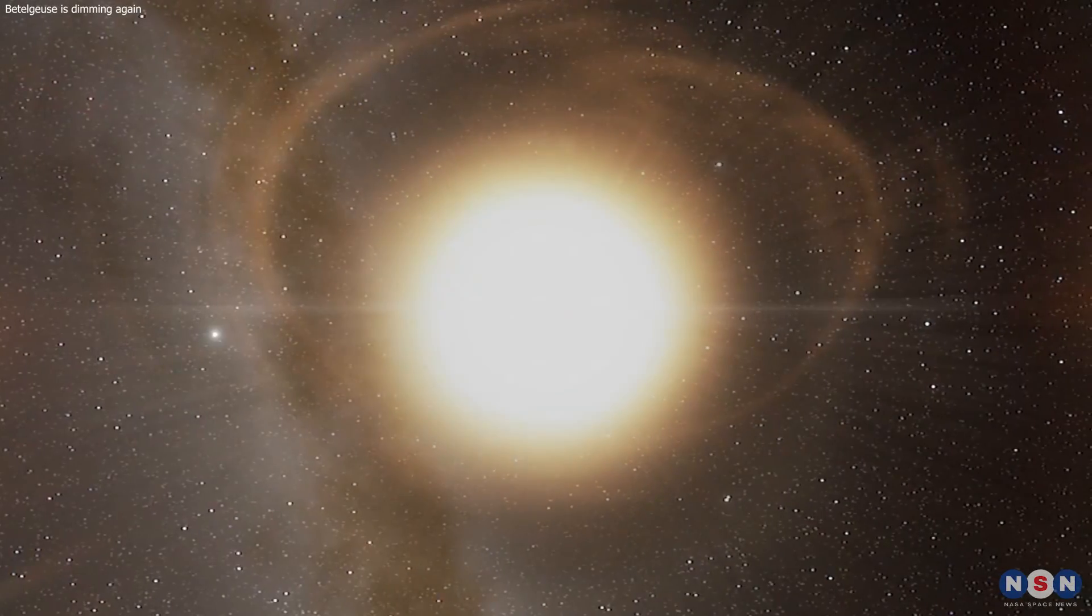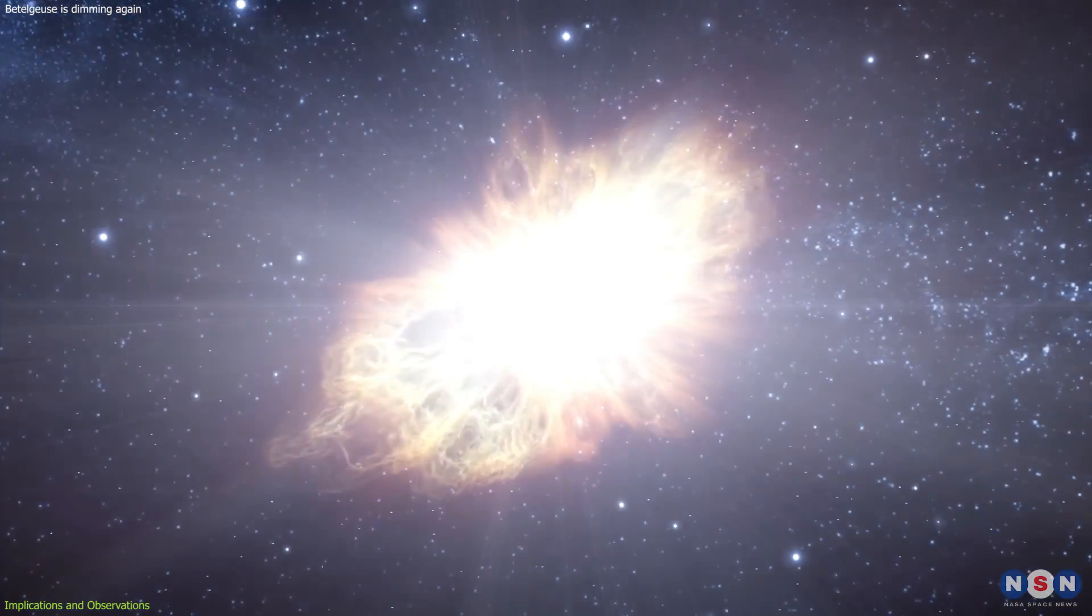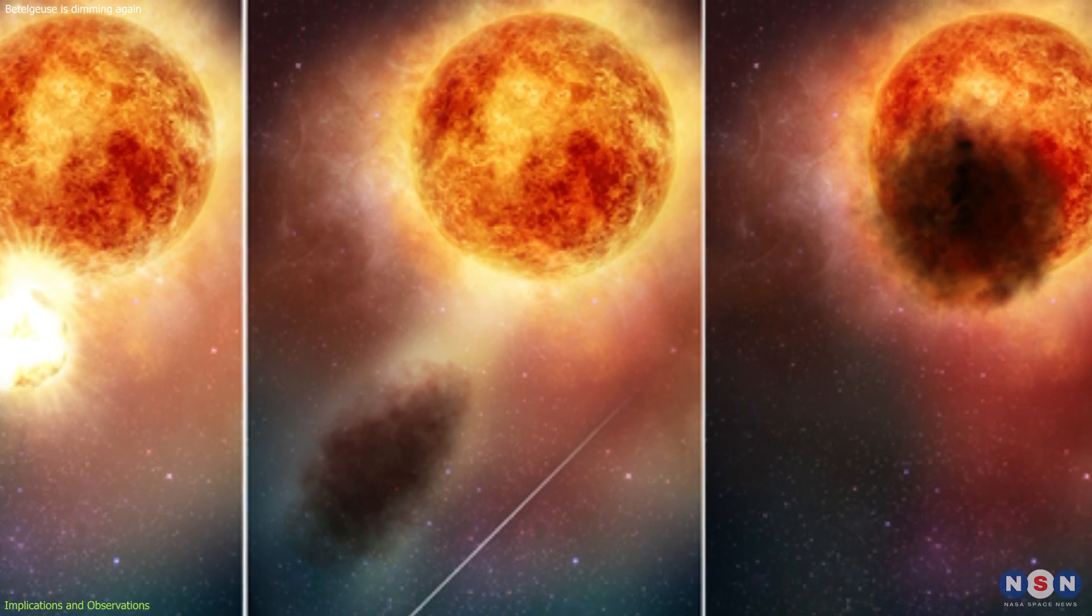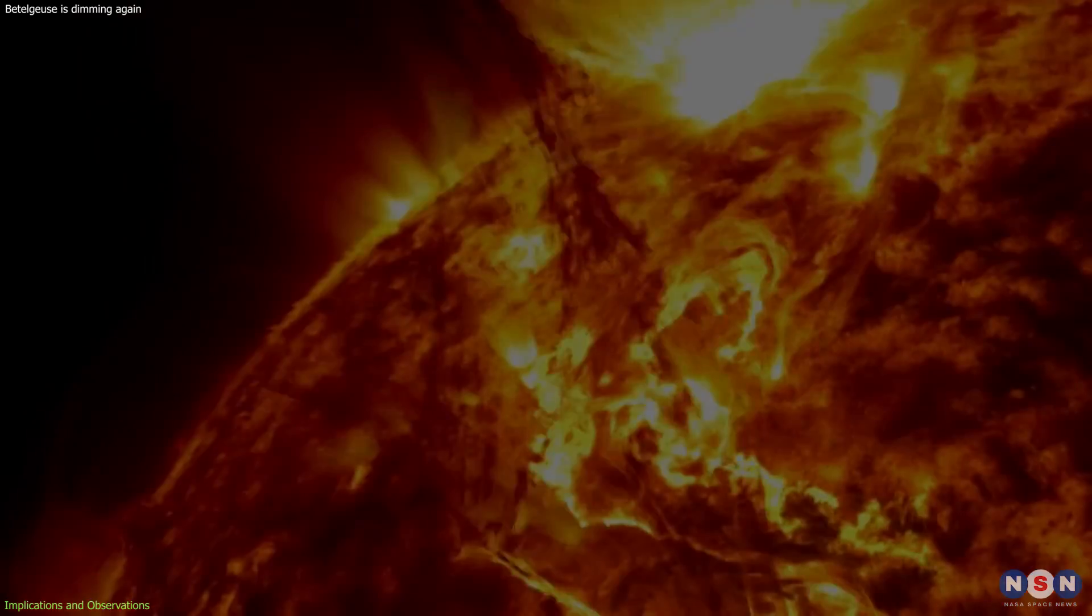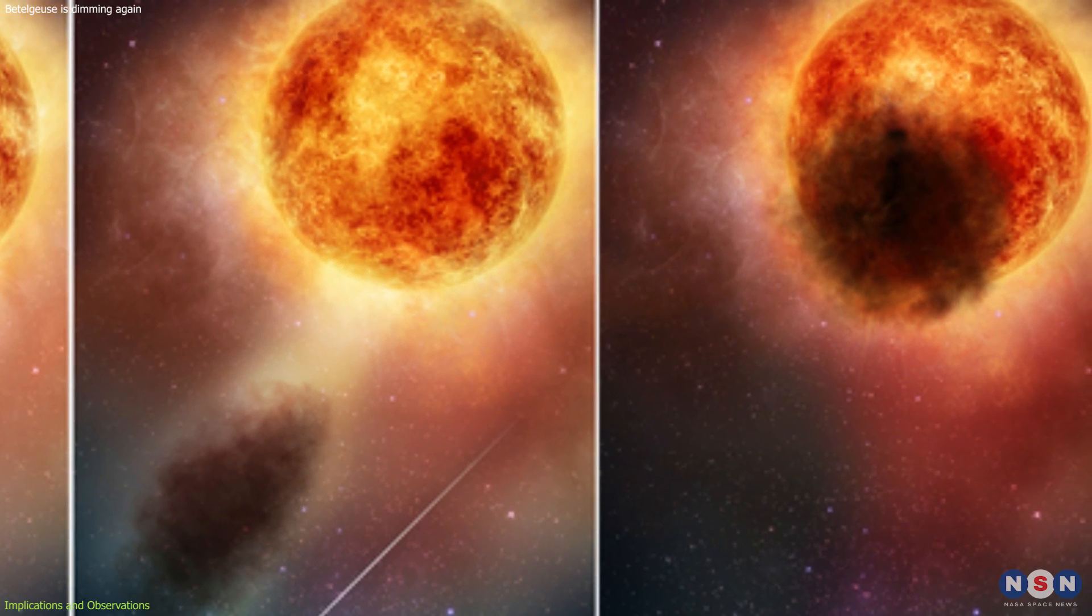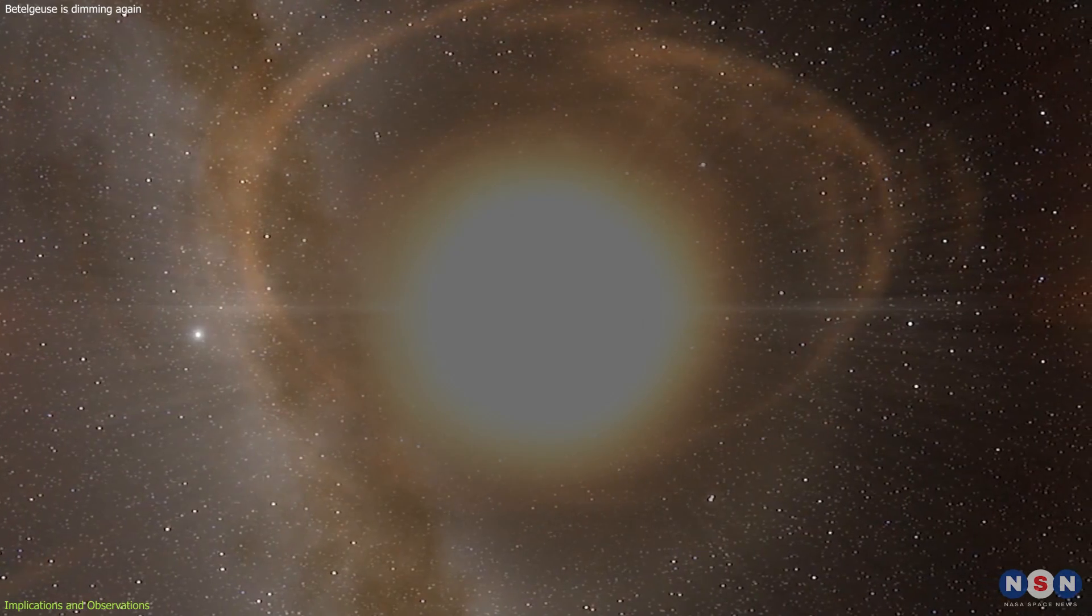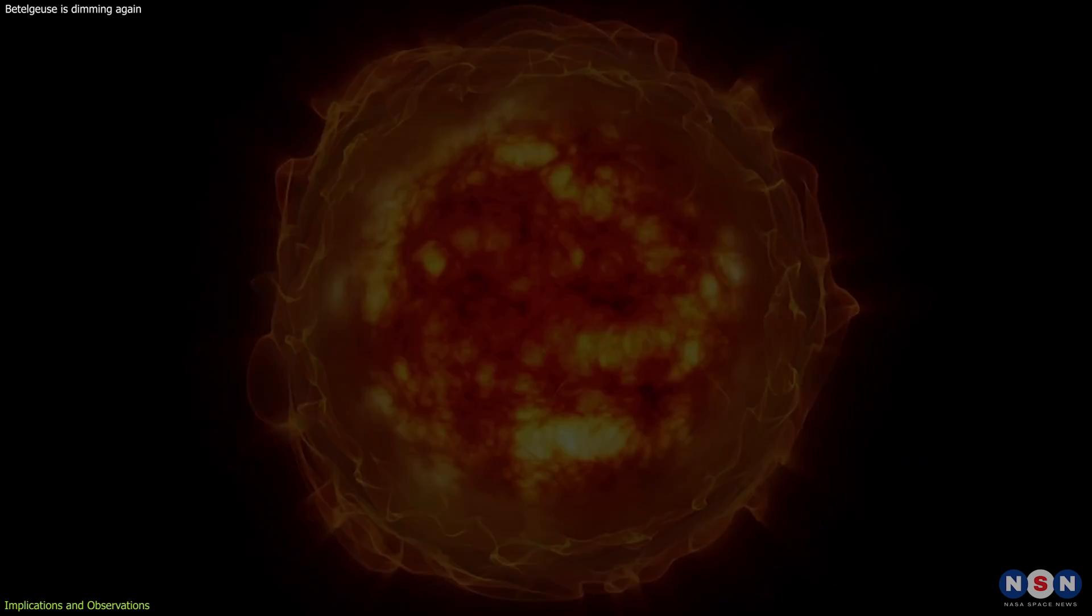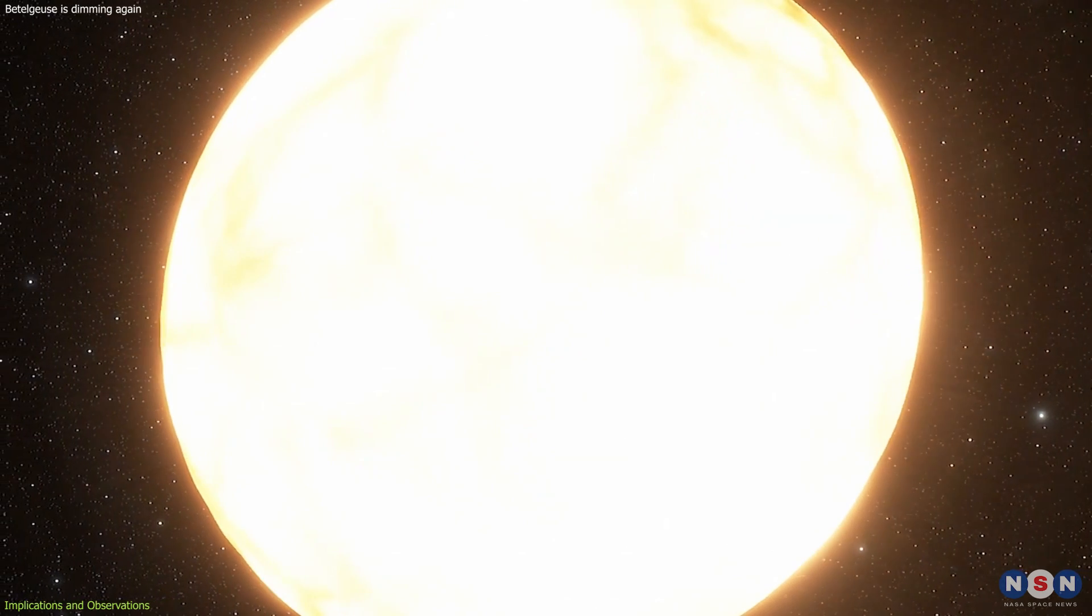The star's brightness decreased by more than a magnitude, leading to speculation about an imminent supernova. However, subsequent analysis revealed that the dimming was caused by a surface mass ejection, a phenomenon where a star expels a large portion of its surface material. This SME resulted in the formation of a dust cloud that temporarily obscured Betelgeuse's light, leading to its apparent dimming. This event was unprecedented and provided valuable insights into the behavior of red supergiants. It also highlighted the importance of continuous monitoring and research to understand these complex celestial objects.